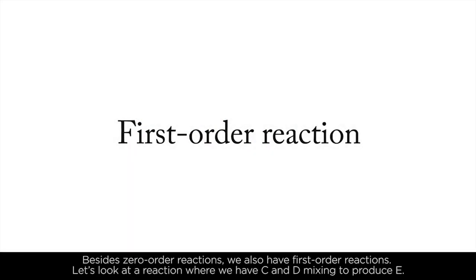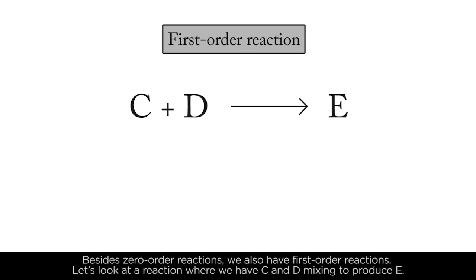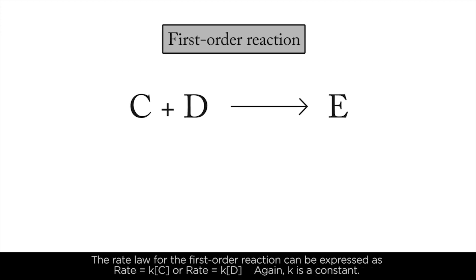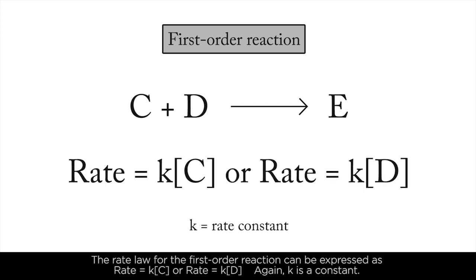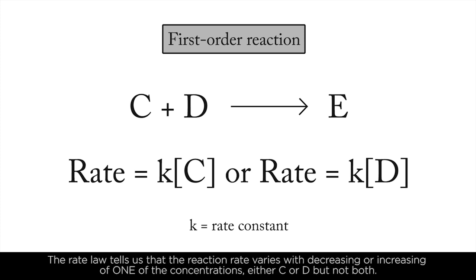Besides zero-order reactions, we also have first-order reactions. Let's look at a reaction where we have C and D mixing to produce E. The rate law for the first-order reaction can be expressed as rate equals K times concentration of C, or rate equals K times concentration of D. K is a constant. The rate law tells us that the reaction rate varies with the increasing or decreasing of one of the concentrations, either C or D, but not both.